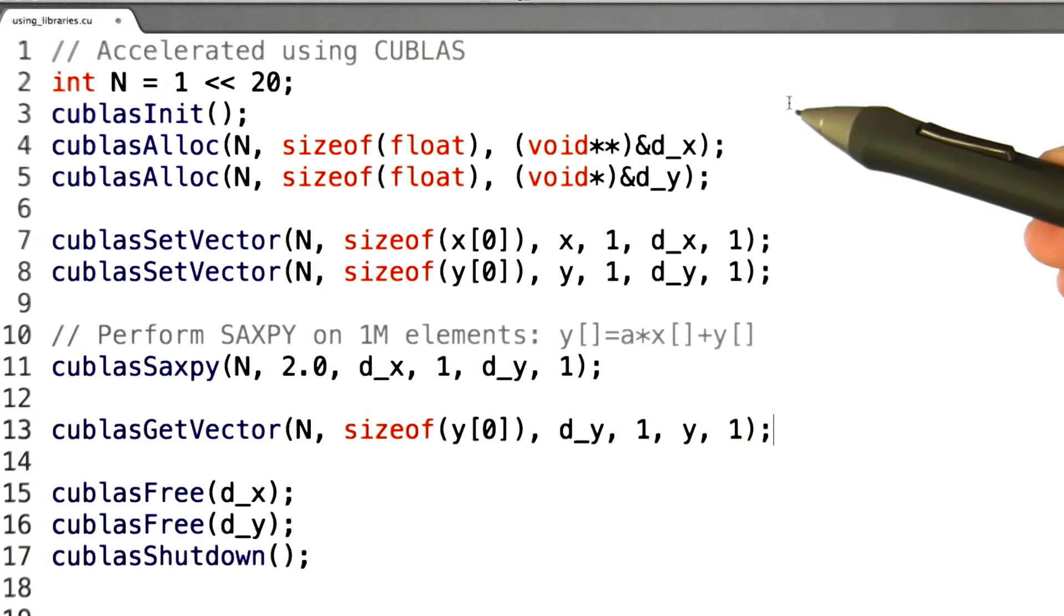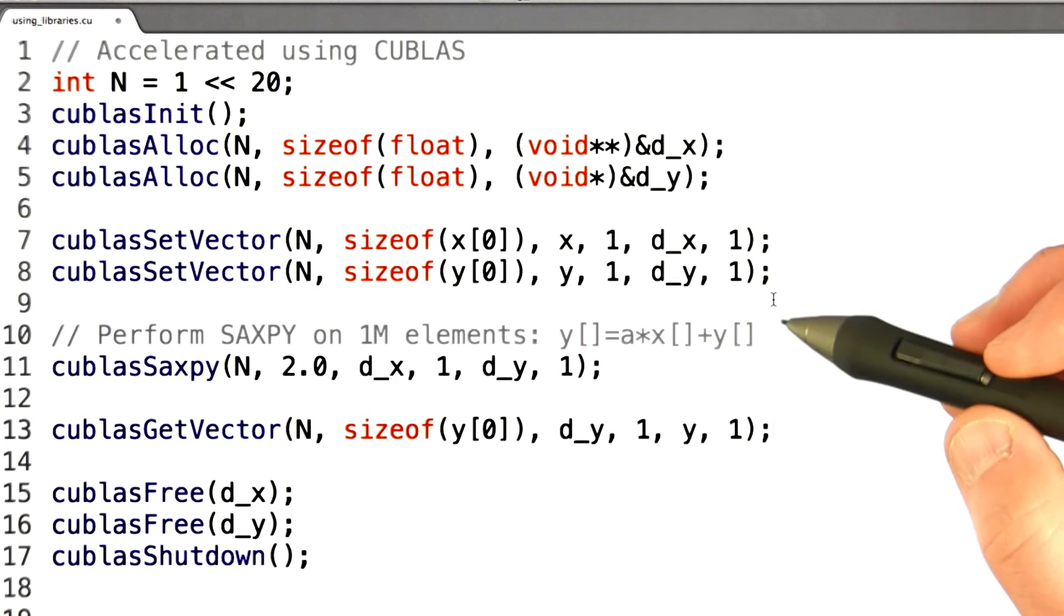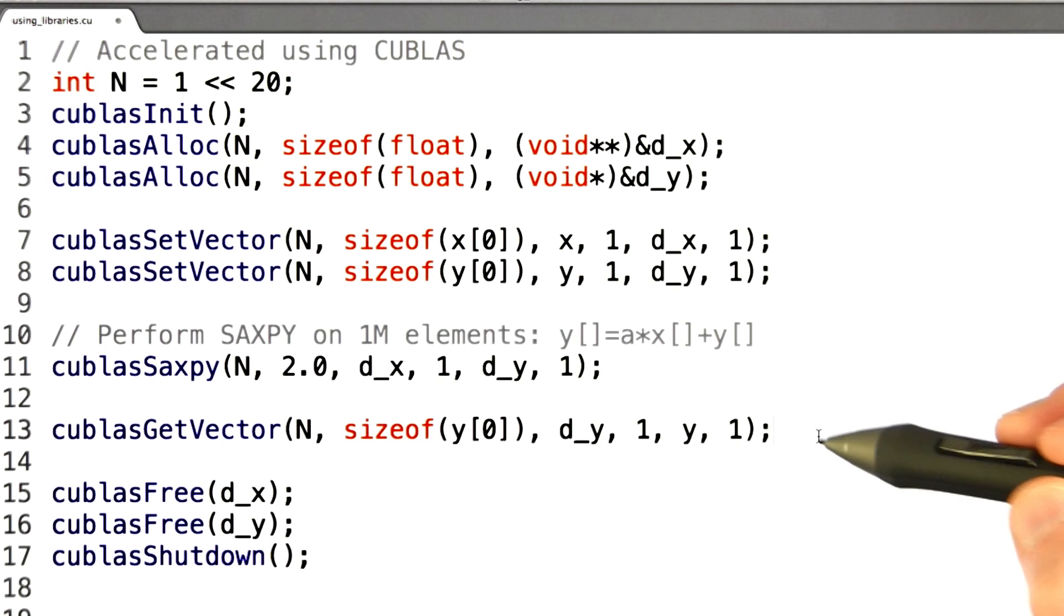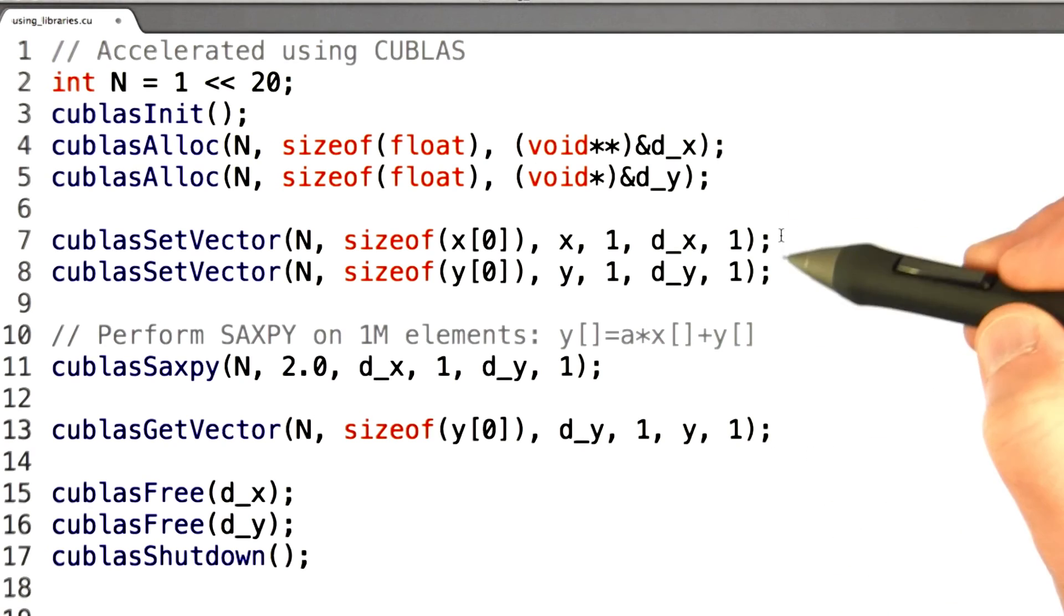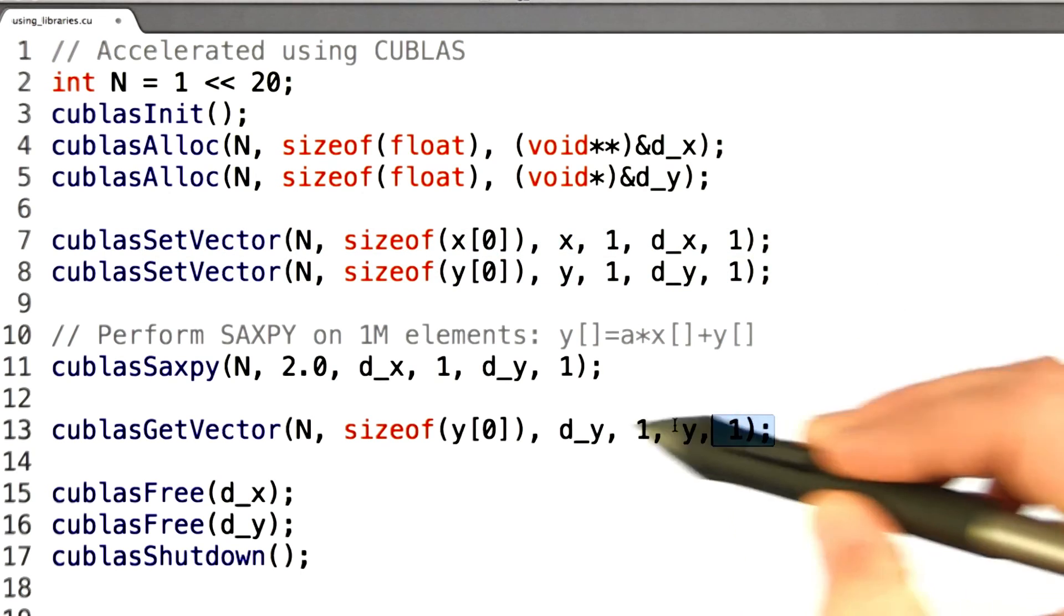Okay, so by the addition of just a few lines, we've accelerated this using CUBLAS. And I'll point out that if you were doing more than just this one simple SAXPY operation, you'd probably leave the intermediate results. You wouldn't keep setting and getting your vectors back and forth to the CPU. You would do some operation, then use the results to do the next operation and so forth. So a lot of this overhead really only appears once at the beginning and end of your calculation.